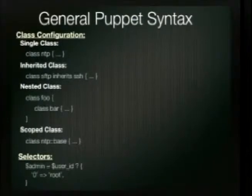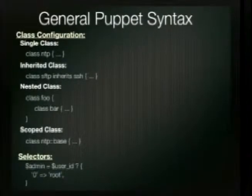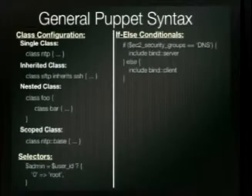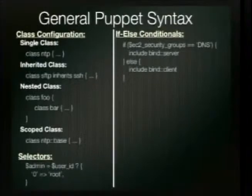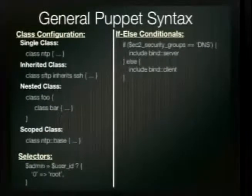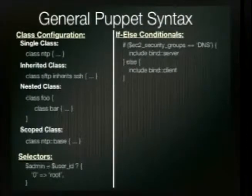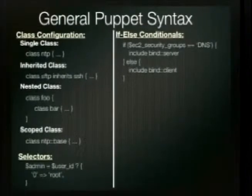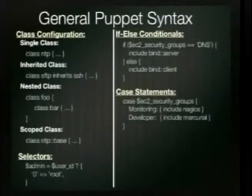You can use selector statements — for example, if the user ID is zero, set the variable 'admin' to 'root.' One real-world example: in an infrastructure with about a hundred hosts, most running MySQL, a selector sets a unique MySQL server ID variable per host and injects it into the config file — no more worrying about duplicate IDs. Conditionals integrate nicely with EC2: that variable is metadata pulled from the EC2 metadata endpoint, so if the security group contains 'DNS,' make it a bind server.